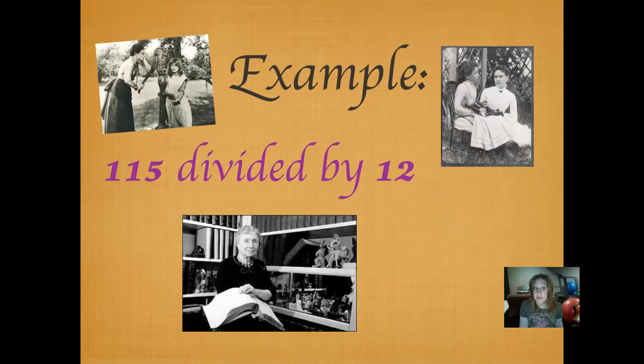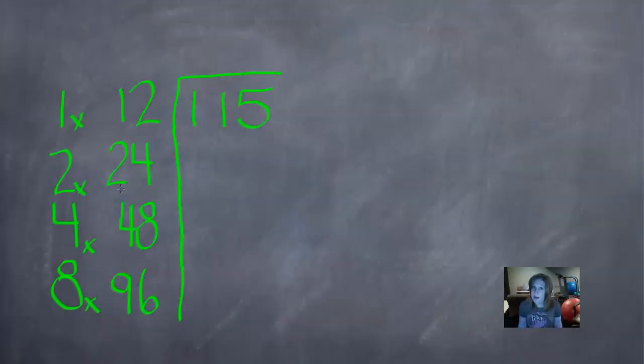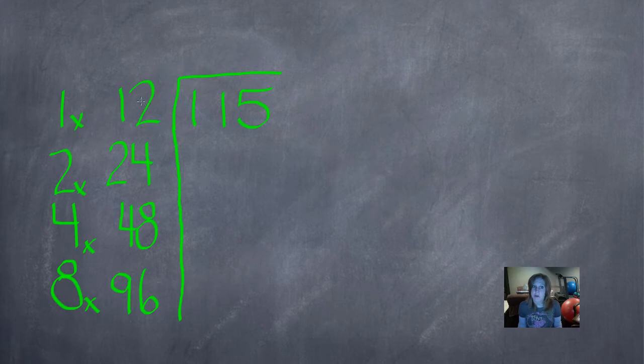Here is our first example, 115 divided by 12. So I went ahead and set up our problem, 115 divided by 12, and I wrote our doubling steps down the side and then doubled our divisor. 12 plus 12 is 24, 24 plus 24 is 48, and 48 and 48 is 96. So now we're going to look at it. We know no number will go into one, none of these numbers here in this column, so we put an x there.